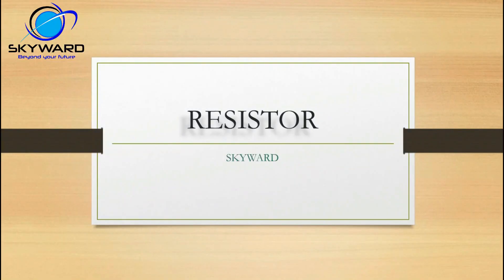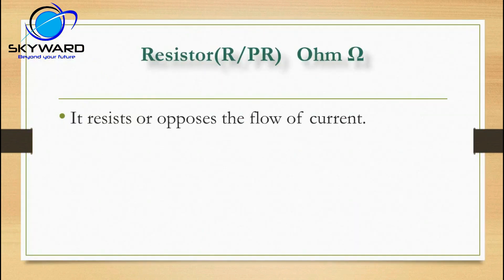Welcome. Today we will see the resistor — what is the work of a resistor. The location of a resistor is marked as R or PR on the board, and the unit is ohm. The work of a resistor is to resist or oppose the flow of current — that is its only function — according to its capability, meaning its resistance value.